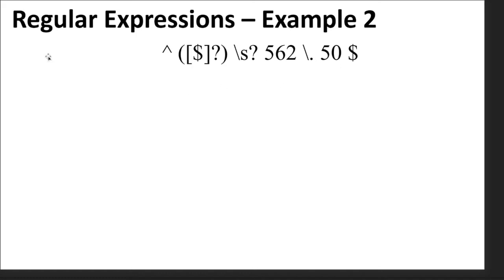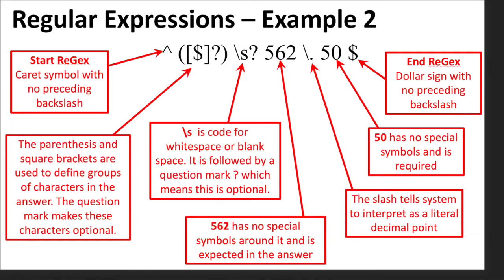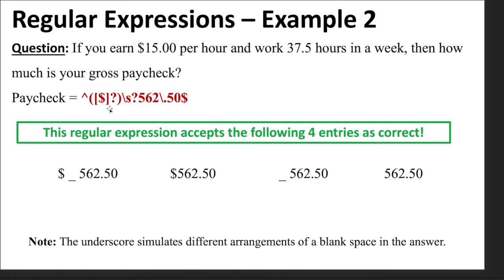The tens and hundreds place is required in money. The dollar sign at the end signals the close of the regular expression. Once again I have everything annotated here — you can pause and take notes. This is how you can code a regular expression to accept a currency answer. As you explore regular expressions, you can see that these are four different answers that would be accepted as correct: a space between the dollar sign and leading five, no space, or no dollar sign at all. If they left the trailing zero off, it would be marked incorrect.